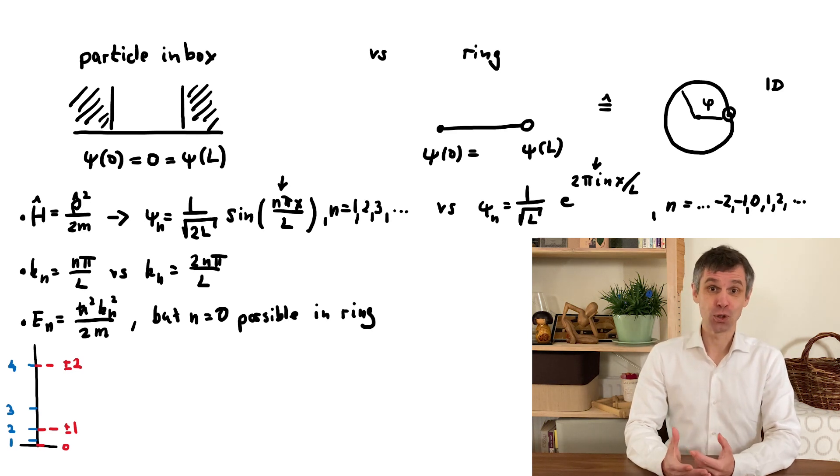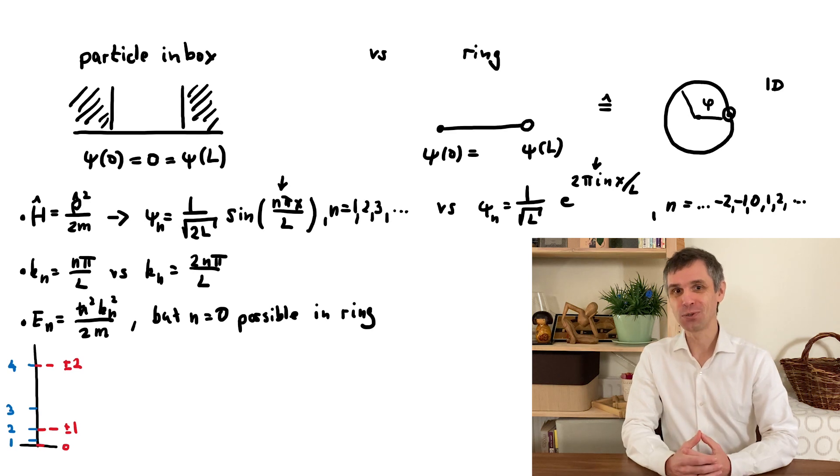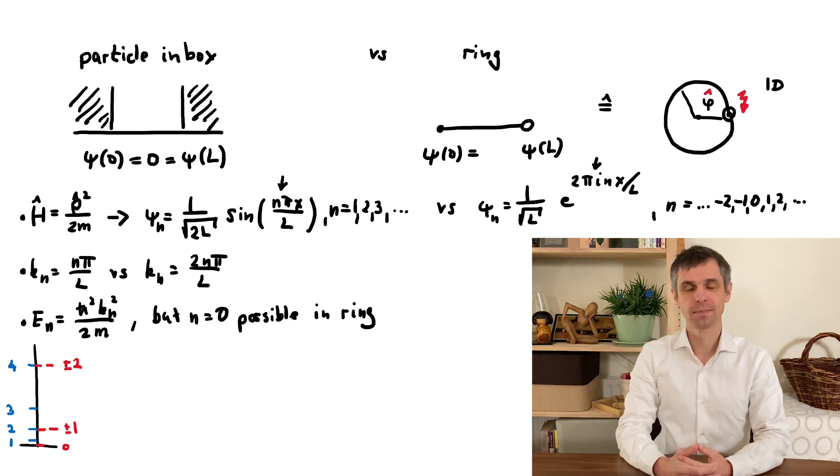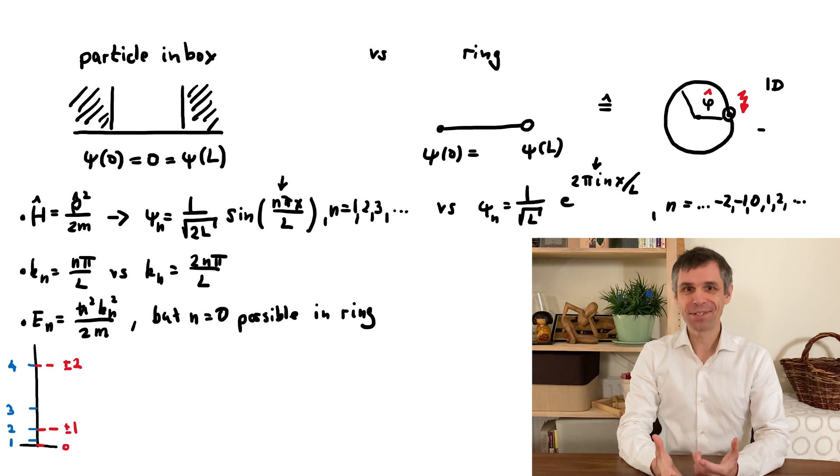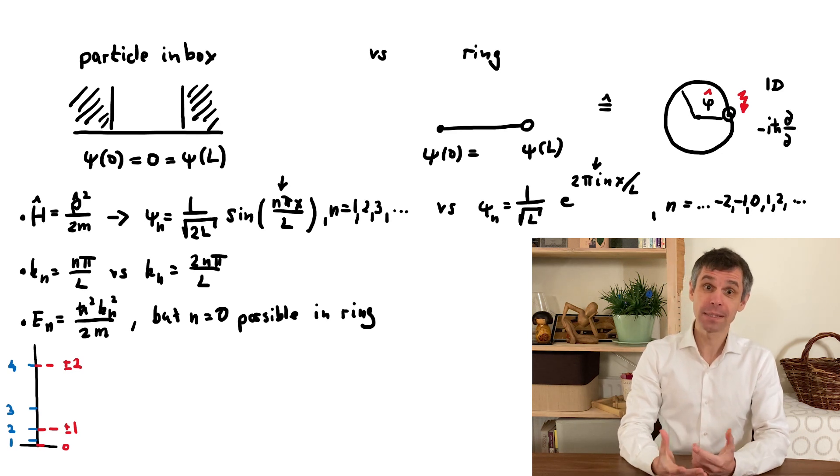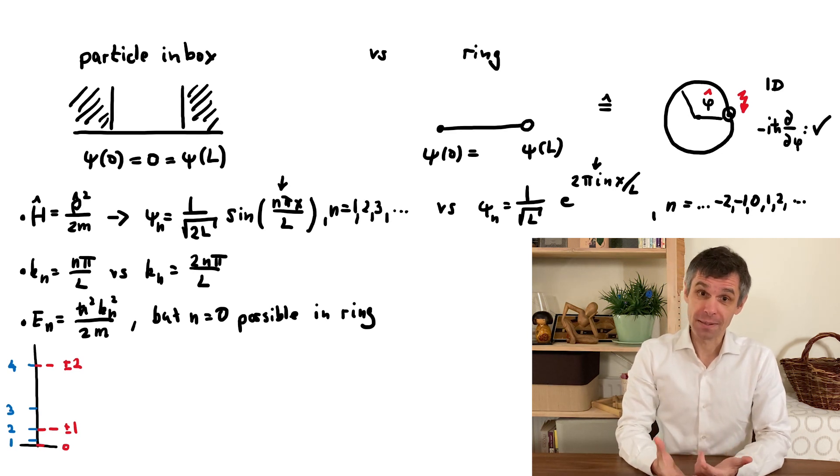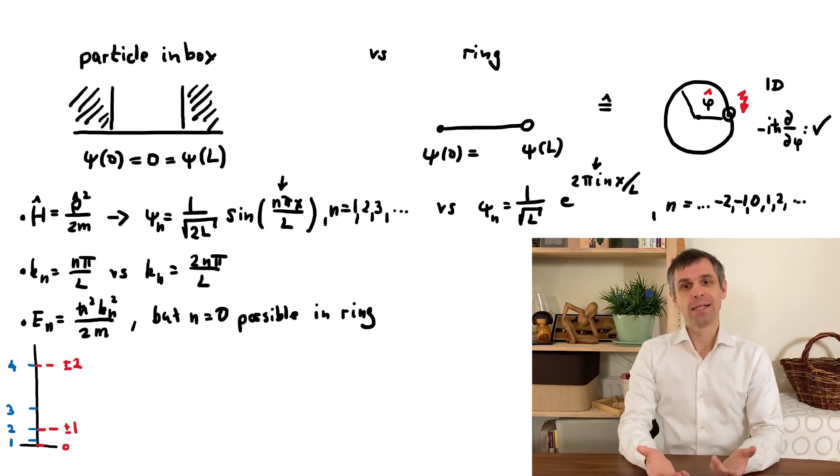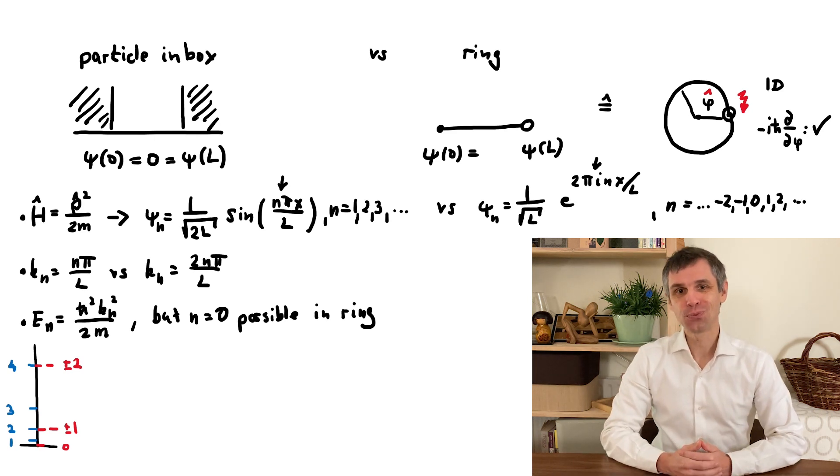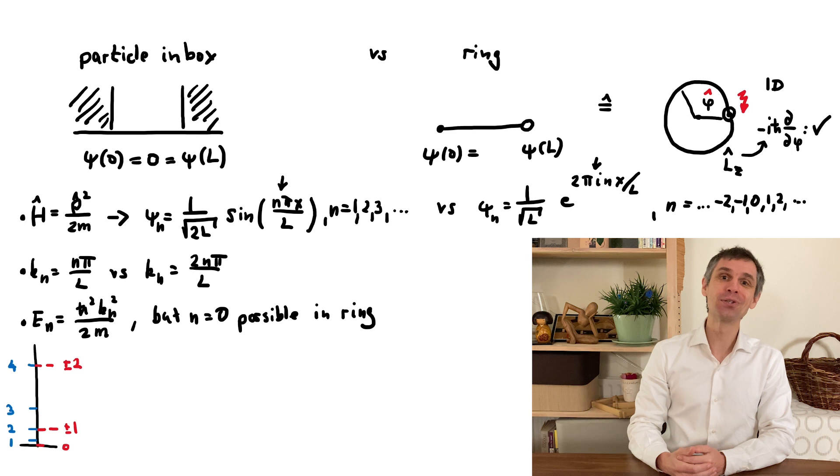As it turns out, this makes it impossible to define a consistent corresponding operator. What you can define is a derivative with respect to this angle, as any constant then drops out, and we will meet this operator very soon because it will turn out to be a component of angular momentum.